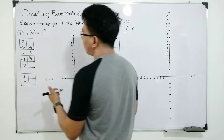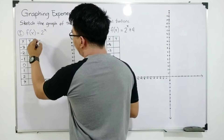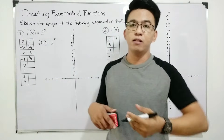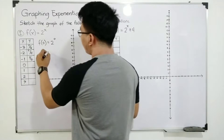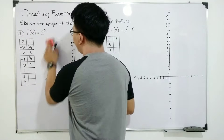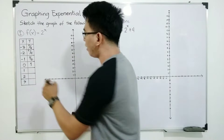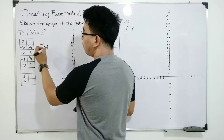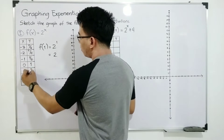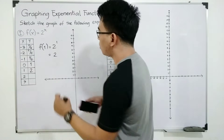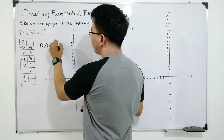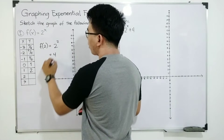If your x is equal to 0, what you will do is that you have f of 0 is equal to 2 raised to 0. And remember, when you raise a number by the exponent of 0, it will give you the answer of 1. So if your x is 0, your y is equal to 1. What if your x is equal to 1? We need to evaluate f of 1. That is 2 raised to 1, and that is equal to 2. For f of 2, that is 2 squared, replacing x by 2, that is 4.